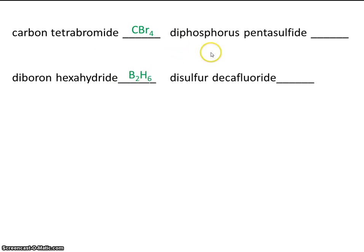Now, if you're not sure what di and penta and deca mean, you should pause the video now and relearn those prefixes. So here we go. Diphosphorus pentasulfide. Well, that means you have two phosphorous and five sulfide.